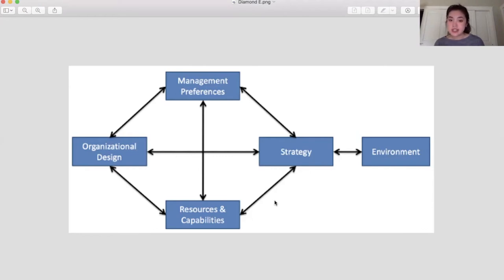Management preferences is the human element, and so you want to be analyzing the biases and preferences of key stakeholders. And in terms of strategy, what we're really looking at here are the goals, product market focus, core activities, as well as value proposition of the company.